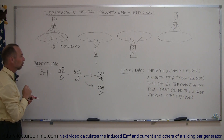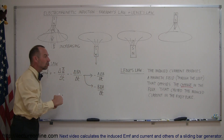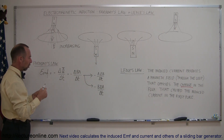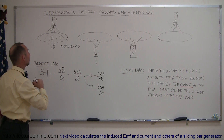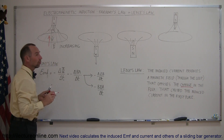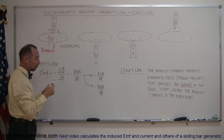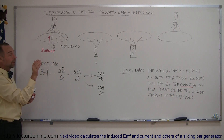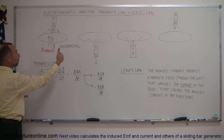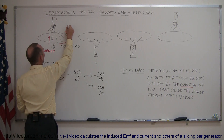It's opposing the change — and this word is very important — it's opposing the change that caused the induced current. So if the flux is increasing, it will set up a magnetic field in the opposite direction to try and keep it from increasing. This is the magnetic field induced by the induced current. Now, using the right-hand rule: if I point my thumb in the direction of the induced B field, I can curl my fingers in the direction of the induced current. In this case, the induced current will be in this direction.